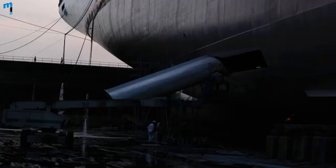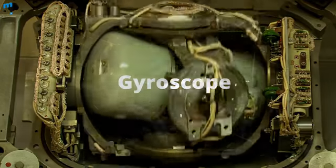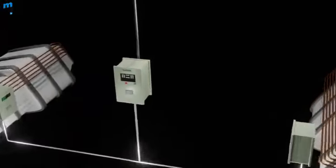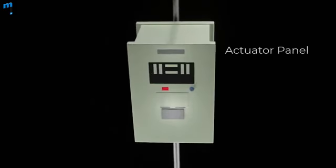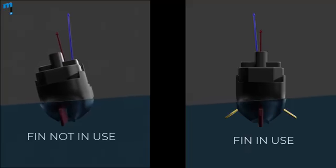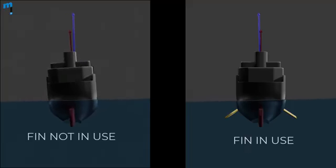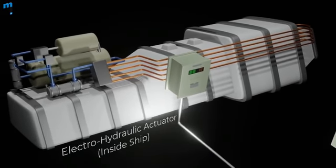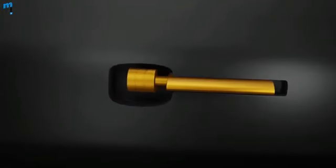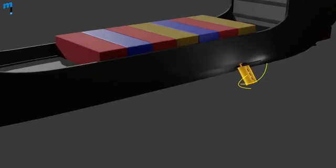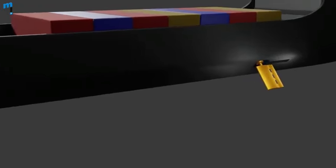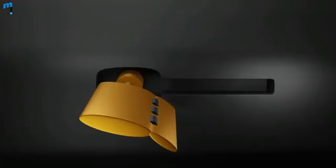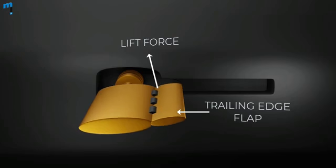With active fins, a sensitive gyro system senses the rolling motion of the ship and sends a signal to the actuating system, which in turn causes the fins to move in a direction so as to create forces opposing the roll. The actuating gear is usually electro-hydraulic. The fins, which may be capable of retraction into the hull, are placed about the turn of the bilge in order to secure maximum leverage for the forces acting upon them. A flap on the trailing edge may be used to enhance the lift force generated.